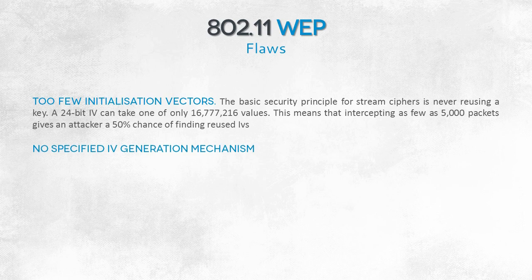Implementation of this weak security mechanism is even worse. The standard doesn't specify the entities responsible for generating IVs — this has to be done by a network card, and the standard doesn't say how. Initially, network card manufacturers used the following system: one for the IV for encrypting the first packet, two for encrypting the second packet, three for the third. It was highly predictable, meaning there can be attacks that consist of assuming a specific value of a vector.